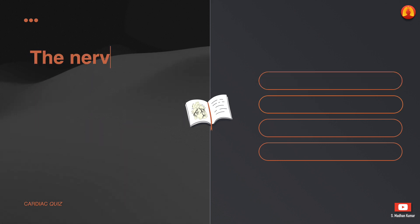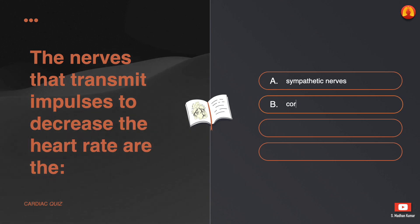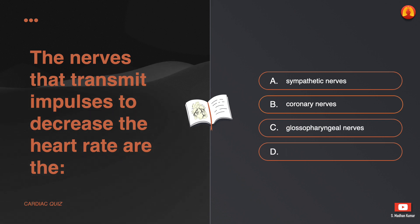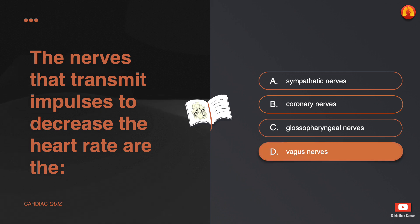The nerves that transmit impulses to decrease the heart rate are the: A. Sympathetic nerves. B. Coronary nerves. C. Glossopharyngeal nerves. D. Vagus nerves. The correct answer is: vagus nerves.